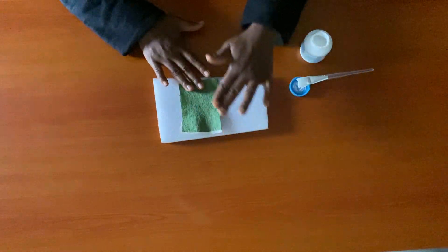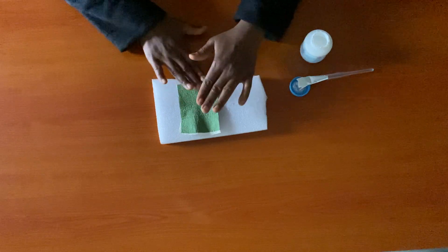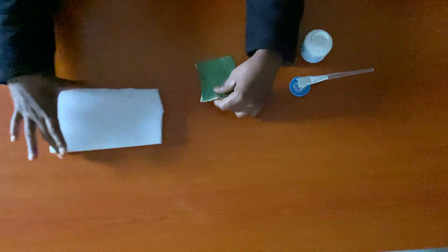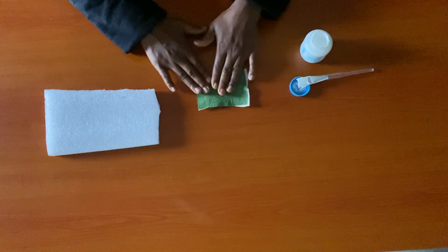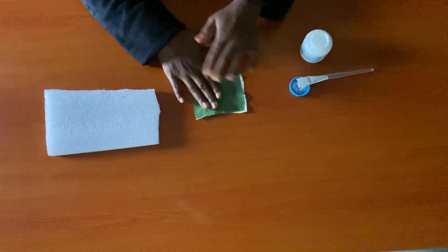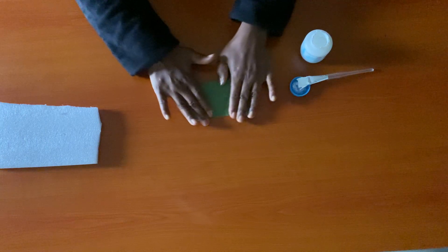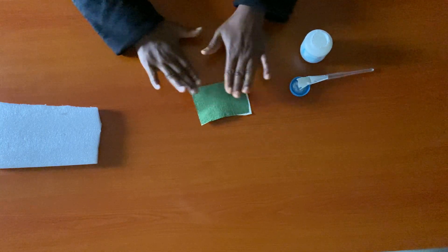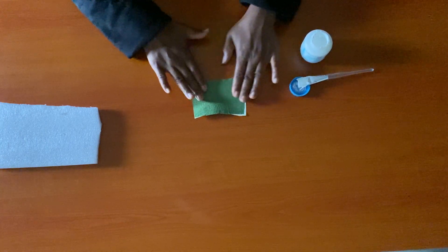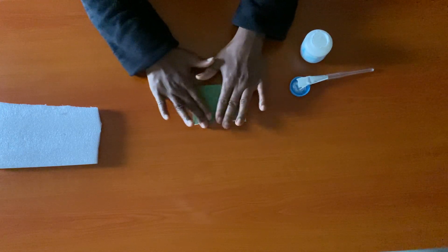So you put the green one on top and then you smooth out. You can place it on a table like this and use your hand to smooth out the glue so that it will be fully laminated.